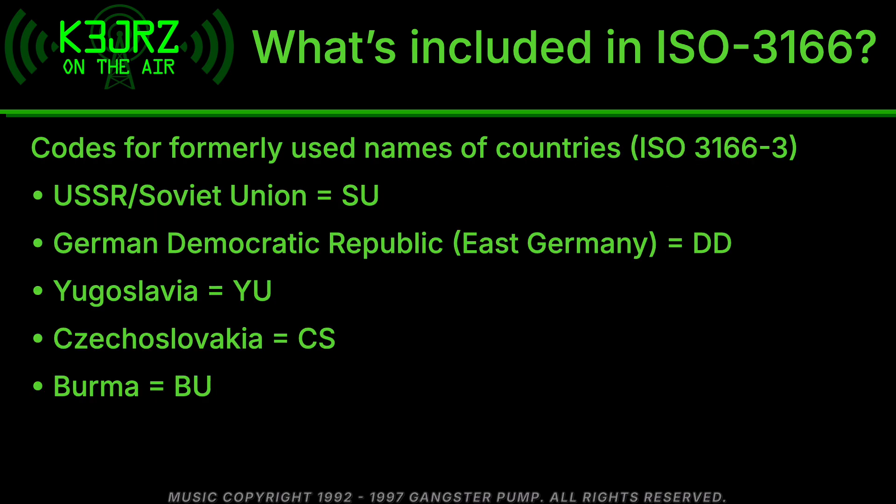Here are some examples of ISO 3166-3 codes for formerly used country names. The USSR, or Soviet Union, was SU. The German Democratic Republic, which was East Germany, was DD. Yugoslavia was YU. Czechoslovakia was CS. And Burma was BU — if you don't know, Burma changed its name to Myanmar, which is why it's a former code.